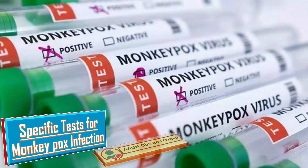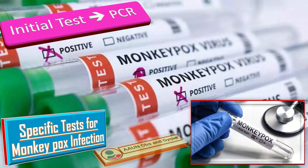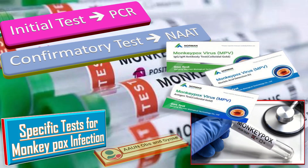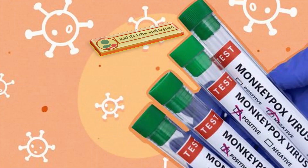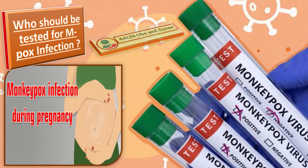Let us talk about specific tests for monkeypox infection. MPOX is diagnosed by PCR test for the monkeypox virus on a viral swab taken from one or more vesicles or ulcers. Swabs should be sent in a viral transport medium. The confirmatory test is nucleic acid amplification testing (NAT), using real-time or conventional PCR for detection of unique sequences of viral DNA. The diagnostic approach for a patient with suspected MPOX infection is the same for pregnant and non-pregnant people, and testing should be considered especially if the person has risk factors for MPOX.